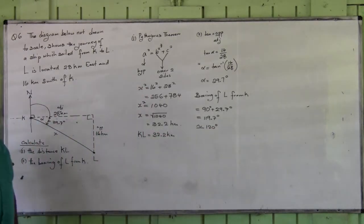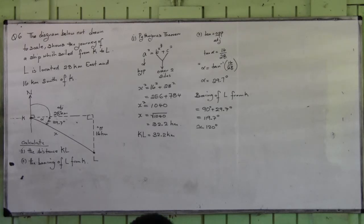The bearing of L from K is approximately 120 degrees. Ladies, this is what I said to you. Bearing is measured. Bearing must be three digits. A bearing must be three digits. It is a three-digit angle direction of one point from a second point measured clockwise from north. The bearing of L from K is 120 degrees. That is the end.